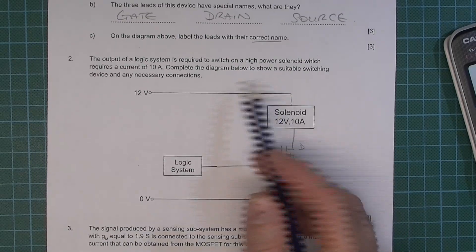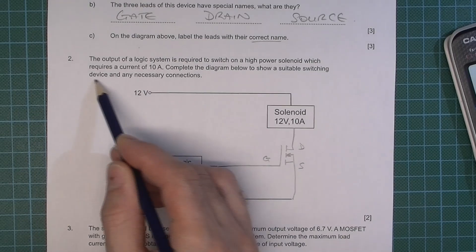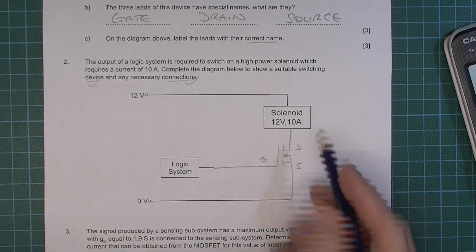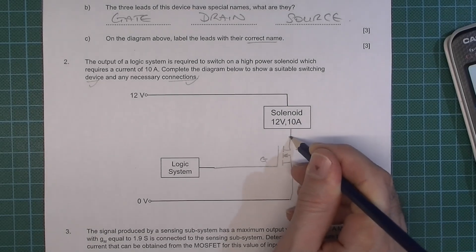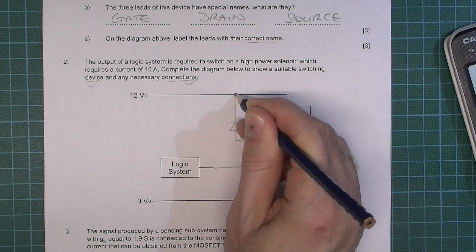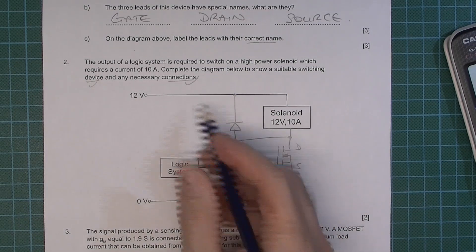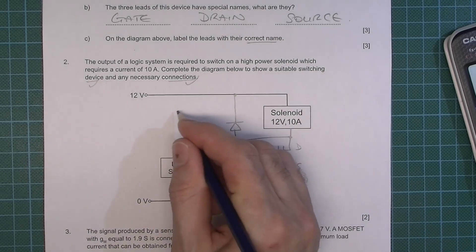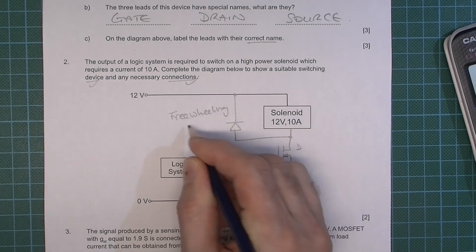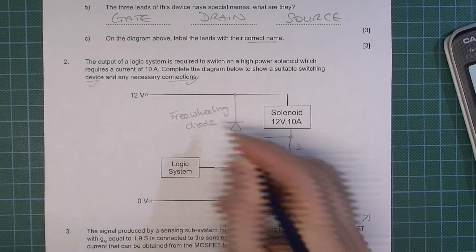Do we need to do anything else? Suitable switching device, OK we've done that, connections, done that. Ah, right, OK, one other thing. I don't know whether they were expecting this but you really need this. This thing is a diode, silicon diode and I'm going to name it a freewheeling diode.